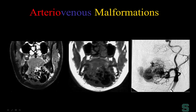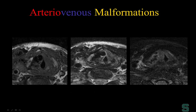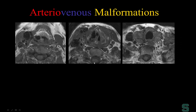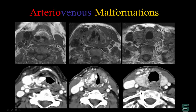Arteriovenous malformations can also involve the larynx. In this case, it involved the floor of the mouth as well. On MR it's somewhat difficult to see, but on CT it is unequivocal — we can see substantial flow in multiple dilated vessels submucosally at the level of the true vocal cord, supraglottic larynx, and subglottic larynx. We confirm the true vocal cord level by the cricoarytenoid joint.